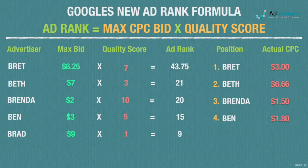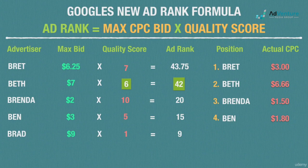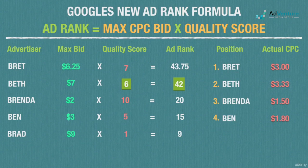We see what a huge role keyword-level quality score plays in determining how much you end up paying for an ad click. Say Beth improves her quality score from 3 to 6 — her ad rank becomes 42, she's still in position 2, but look what happens to her actual CPC. Now dividing 20, the ad rank to beat, by 6, her quality score, we get an actual CPC of $3.33 — half of what she was paying before. By increasing her quality score by just a few points, she drastically lowered her actual CPC.